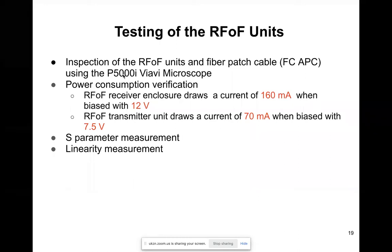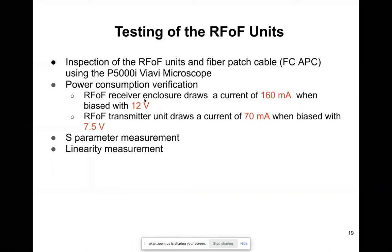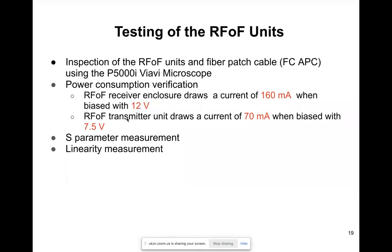I used a UV microscope to inspect the connectors. You also need to check for power consumption since these components are very delicate. For our case, the RFoF fiber receiver draws a current of around 160 milliamps when biased at 12 volts, and the RFoF fiber transmitter draws a current of 70 milliamps when biased at 7.5 volts, though it can also operate at 12 volts depending on the design.